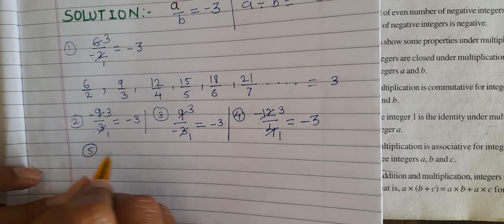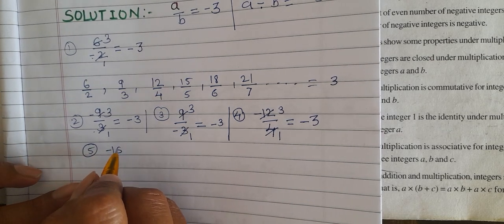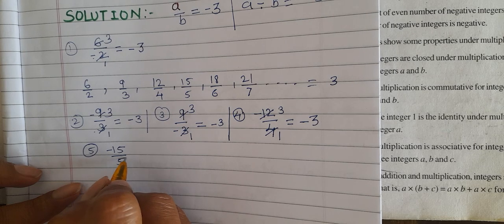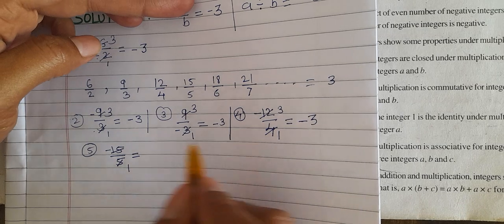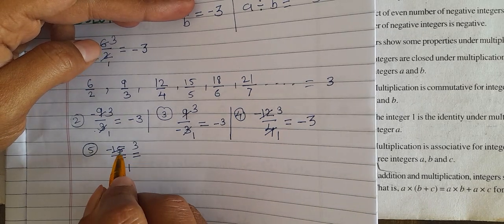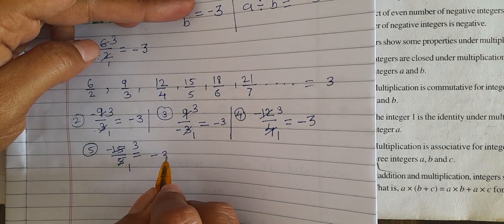Fifth one, minus 15 divided by 5 is equal to 5 times 3 is 15, minus and plus, so answer is minus 3.